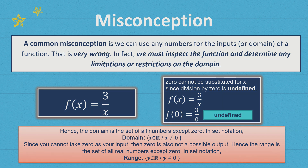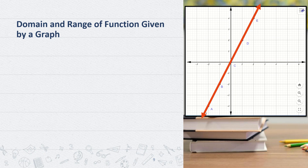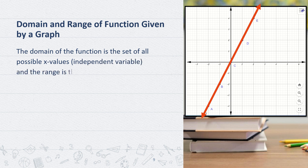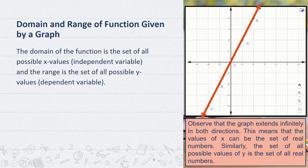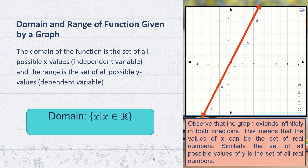Let us find the domain and range of a function given by a graph. Using the graph on the right, remember that the domain of the function is the set of all possible x values or independent variables, and the range is the set of all possible y values or dependent variables. Observe that the graph extends infinitely in both directions, meaning the values of x can be all real numbers and similarly the set of all possible y values is also all real numbers. Therefore, the domain is {x | x ∈ ℝ} and the range is {y | y ∈ ℝ}.